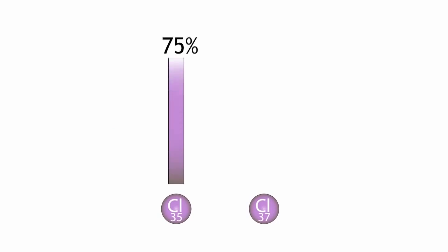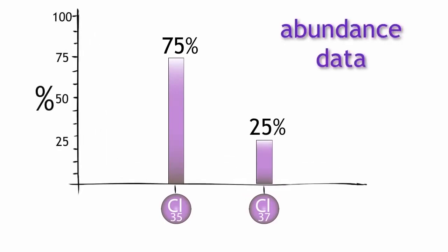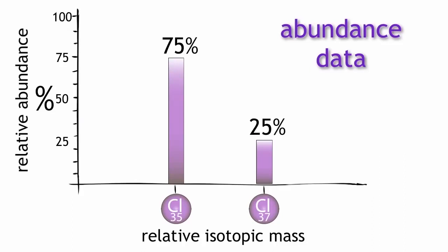Naturally occurring chlorine is made up of 75% chlorine-35 and 25% chlorine-37. This can be shown on a graph where the relative isotopic mass is shown along the x-axis and the relative abundance is shown on the y-axis.